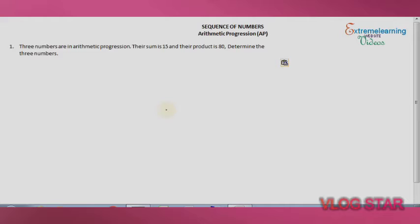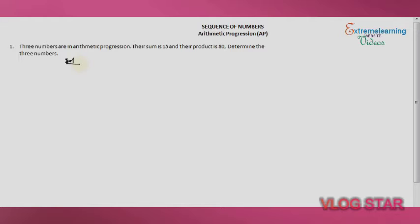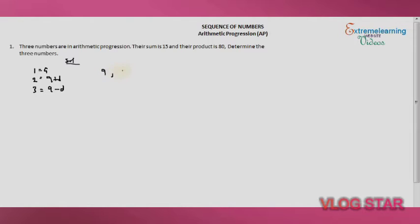Now, determine the three numbers. It takes a few steps to get there. The three numbers in AP are represented as: the first number is (a minus d), the second number is (a), and the third number is (a plus d). Using this form makes it easier to solve.